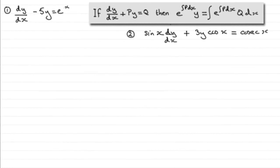In the previous video in this series on solving first-order differential equations, I showed you that if you had a first-order differential equation of the form dy/dx + py = q, where p and q were functions of x, then we got this general solution: e to the integral of p dx times y equals the integral of e to the integral of p dx times q, integrated with respect to x.